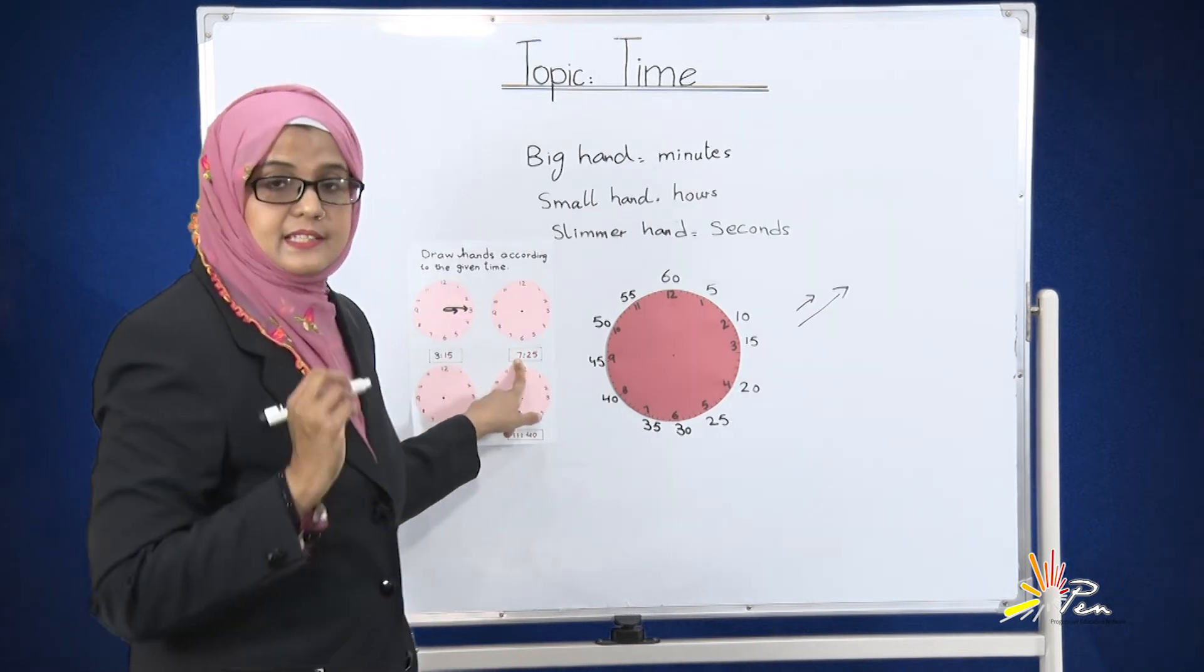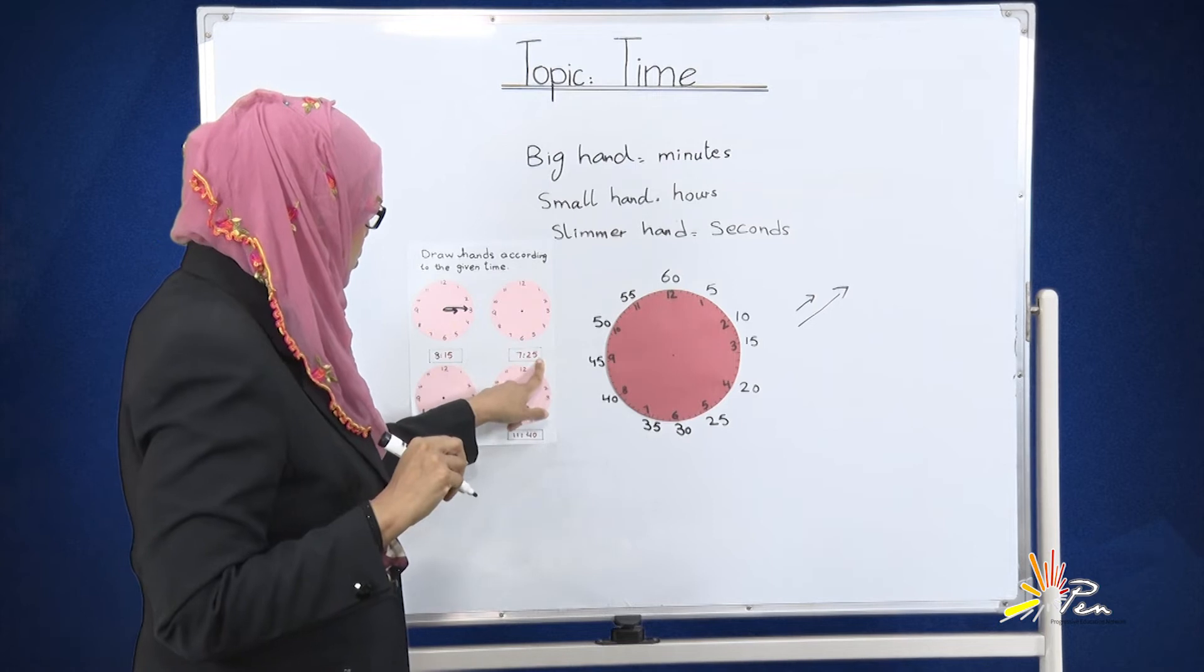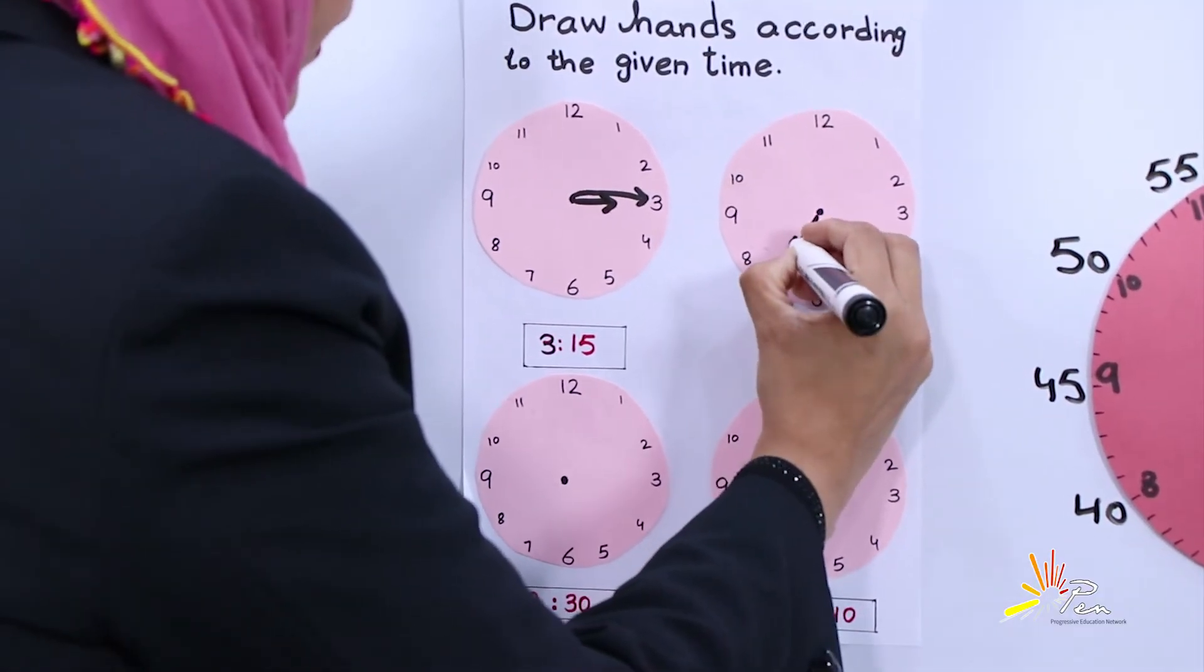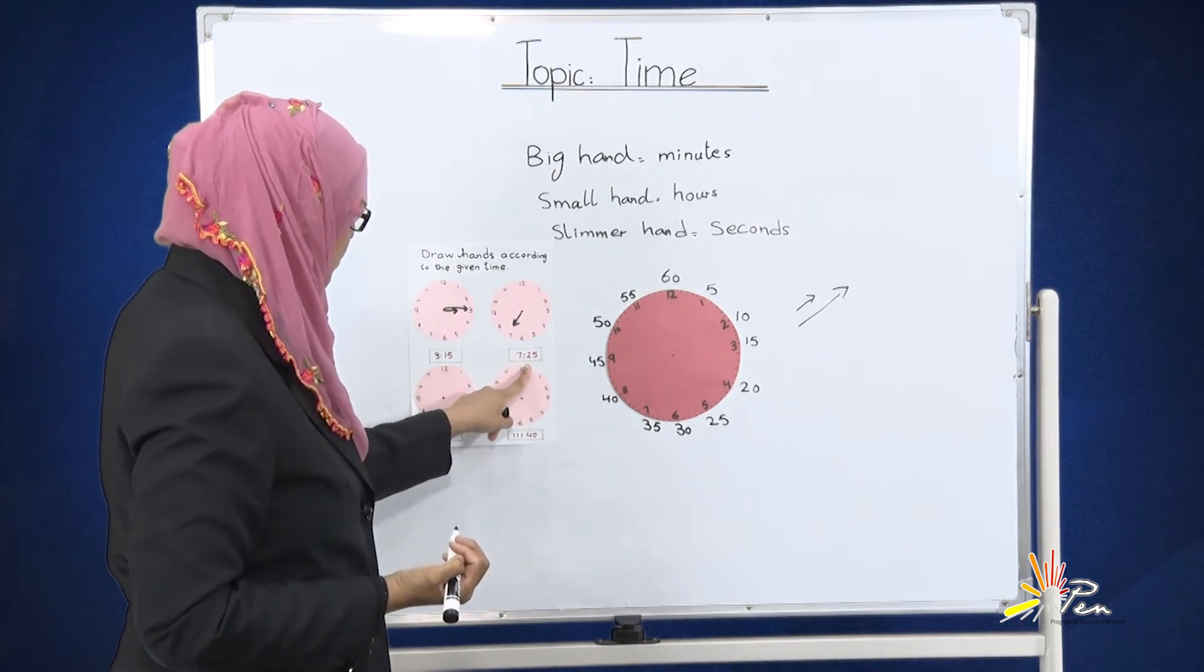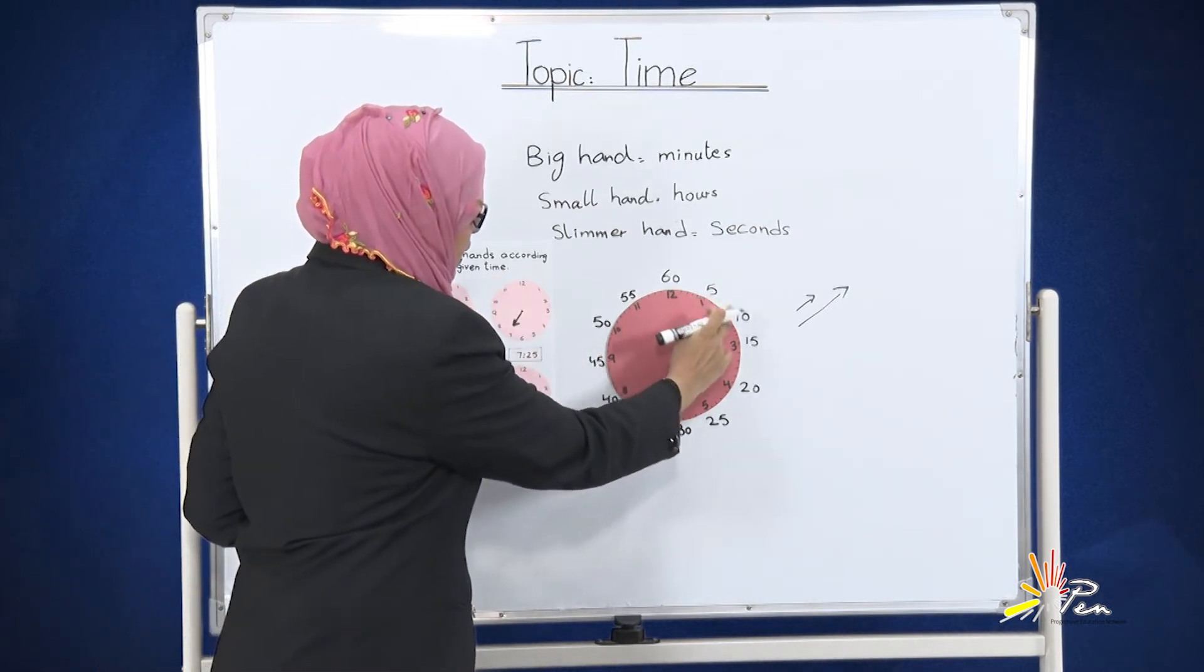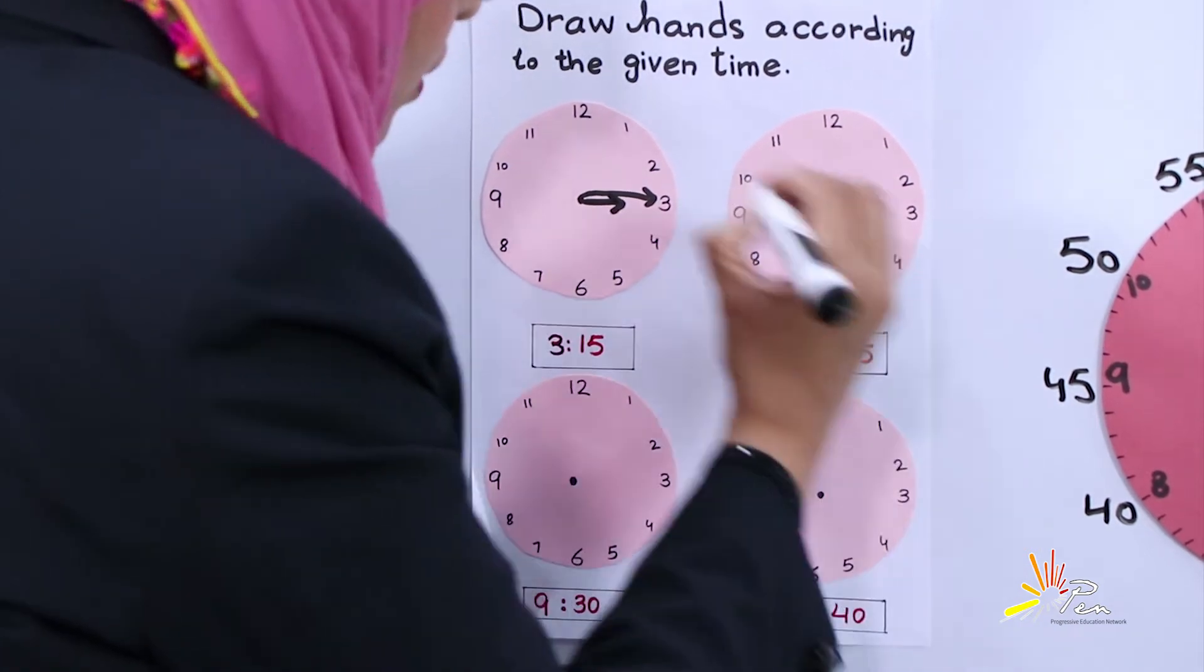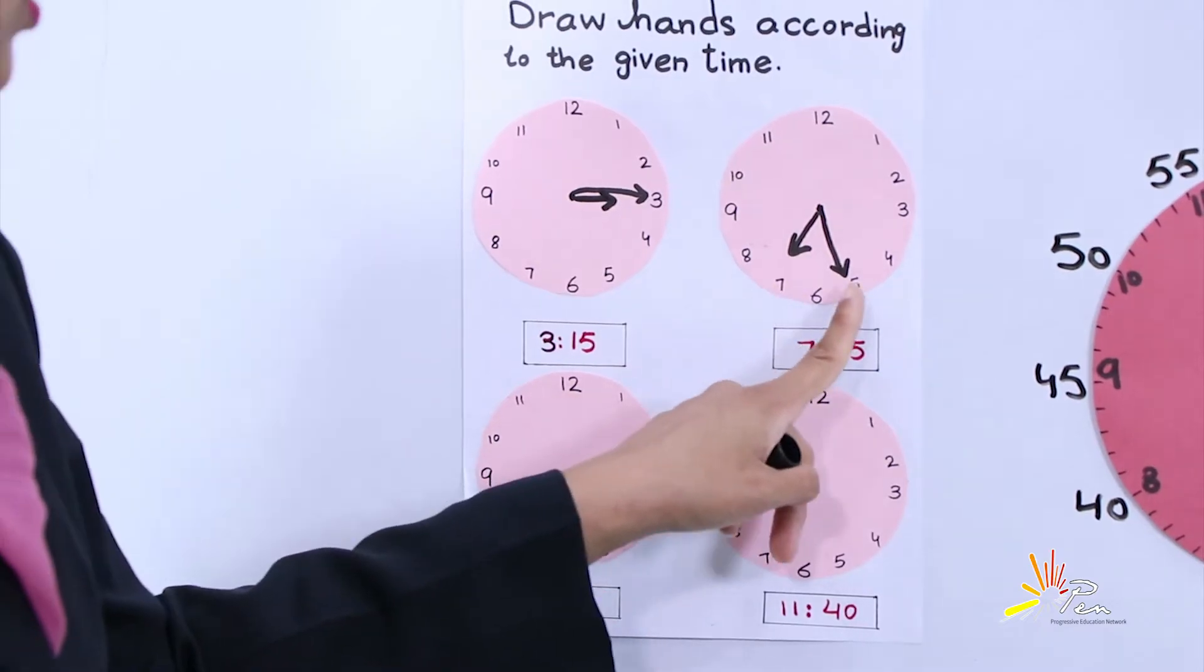This time is 7:25. 7 tells us about hours, and 25 tells us about minutes. Small hand on the number 7. And 25, where will we draw the bigger hand to show the minutes? 25: 5, 10, 15, 20, 25. We will draw a bigger hand towards the number 5. Now this clock tells us the time 7:25.